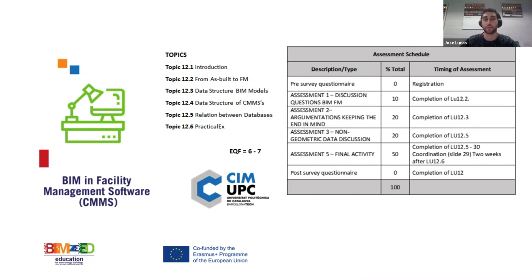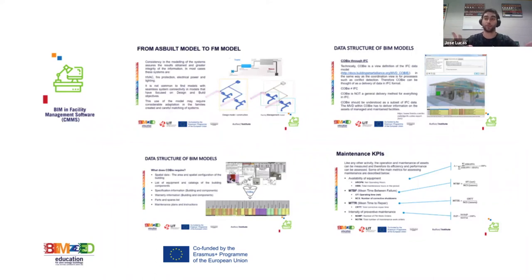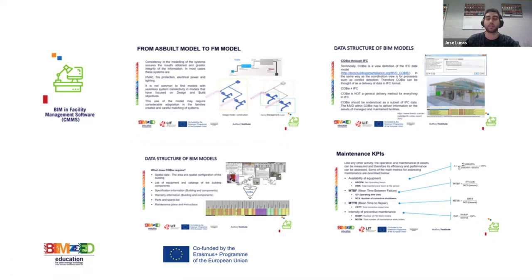Examples include COBie standards, how to separate systems depending on the facility tasks, how those systems are organized differently than in a BIM model, how to obtain COBie data through an IFC export, and KPIs of maintenance. This final unit is practical in some parts and very theoretical in others, but it was considered very useful for the future of the construction sector regarding energy efficiency.